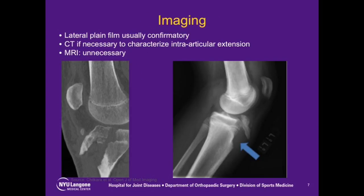The diagnosis of a tibial tubercle avulsion fracture can often be made solely on plain radiographs, with a displaced tibial tubercle evident on the lateral view. If concerns for intraarticular extension exist, a CT scan may be obtained for improved characterization of the injury and preoperative planning.